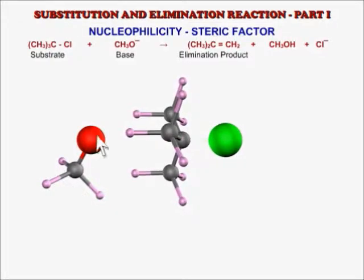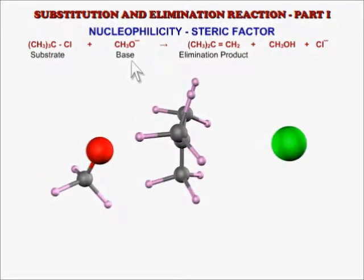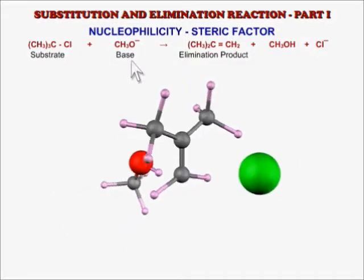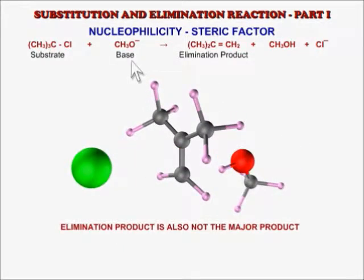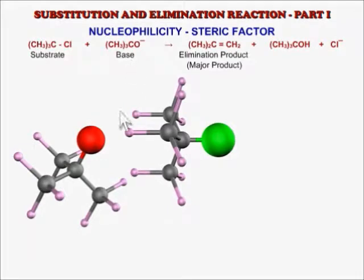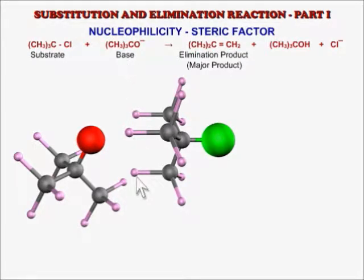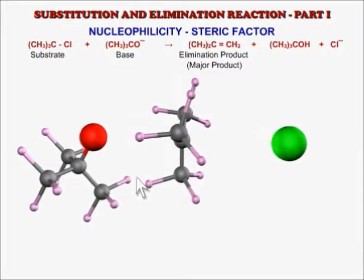Methoxide ion also acts as a base, so the elimination product is also formed. Tertiary butoxide ion is the largest nucleophile and is such a weak nucleophile due to its large size that it will rather act as a base, since a base only needs to interact with a hydrogen atom which is normally situated at the outskirts of the substrate molecule. In this reaction, the elimination product is the major product.